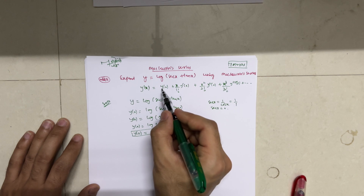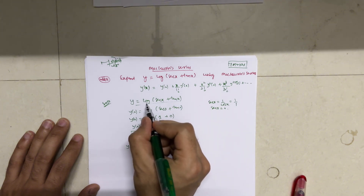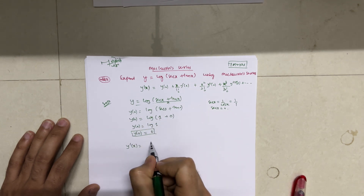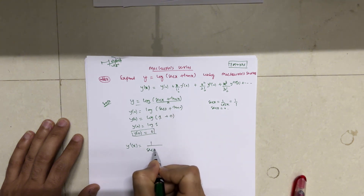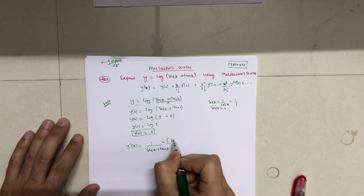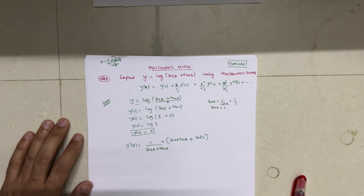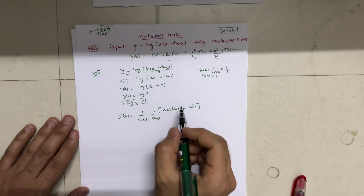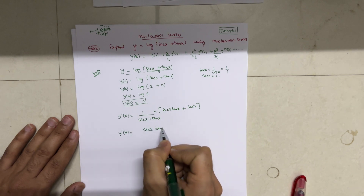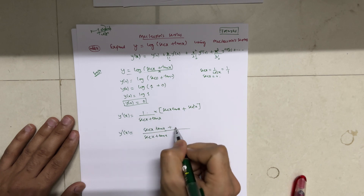Now we calculate y'(0). Differentiating y = log(sec x + tan x): treating (sec x + tan x) as the inner function, differentiation of log gives 1/(sec x + tan x), multiplied by the internal derivative which is sec x·tan x + sec²x.